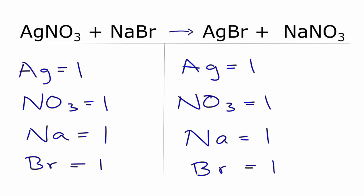So this is Dr. B with the balanced equation for AgNO3 plus NaBr yields AgBr plus NaNO3. And thanks for watching.